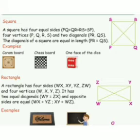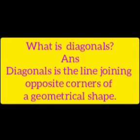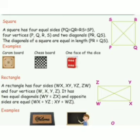What is diagonals? Do you know? Answer: diagonal is the line joining opposite corners of a geometrical shape. Square has four sides and four corners and two equal diagonals. See the picture.